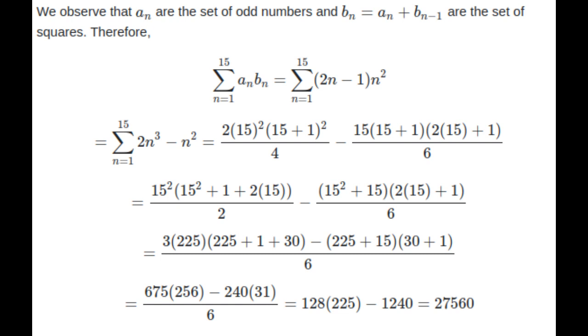This simplifies to sum from n equals 1 to 15 of 2n³ - n². Using standard formulae, this becomes 2 times 15² times (15 + 1)² divided by 4, minus 15 times (15 + 1) times (2 times 15 + 1) divided by 6.